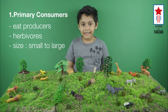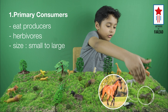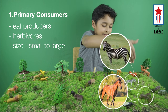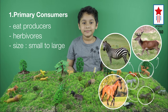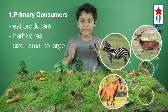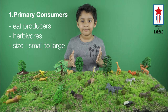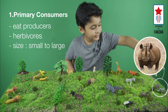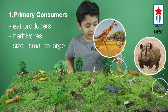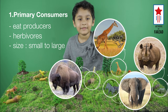Medium sized animals like horses, zebras, and deer. We can also see massive sized mammals like rhinoceros, giraffes, bison, and elephant.